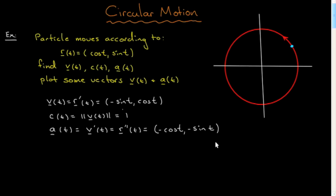Let's discuss this with regard to plotting some of these vectors. Let me first plot the position. Here's the position vector, drawn at the corresponding point. This is the position vector r at a particular time corresponding to that particle. The motion is in this direction, and the derivative of this motion will be a vector pointing in this direction here.